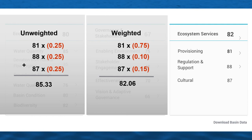Here you can see the comparison between the unweighted and weighted means. In this example, stakeholders value the provisioning service much more than the others, and you can see the weights given to the different groups of services. Since regulating service had the lowest score, this pattern of different weights given to different groups is reflected in the result of the final score of this component. You can see the difference in means here.